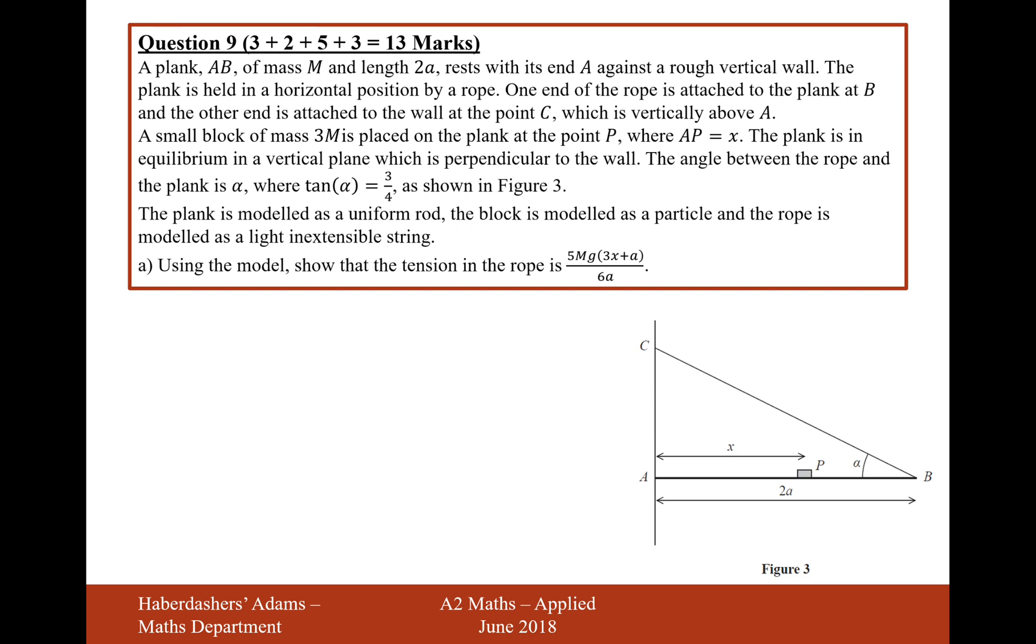The plank is modeled as a uniform rod, the block is modeled as a particle, and the rope is modeled as a light, inextensible string. Using the model to show that the tension in the rope is this expression here. Okay, let's start adding some stuff to our diagram. Now, we're saying that the plank is modeled as a uniform rod, and the rod has a mass of M. So, halfway in that rod, we have a mass M. We also have the mass P, which is 3M as well, so that's going to be Mg and 3Mg.